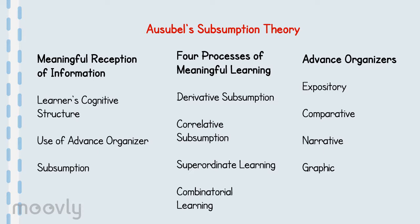The subsumption theory breaks down the process of learning into four sets: derivative subsumption, correlative subsumption, superordinate learning, and combinatorial learning. These provide the synthesis and integration for the development of new knowledge in invention and creative thinking, and are the basis for the advanced organizer model of teaching. There are multiple types of organizers out there.